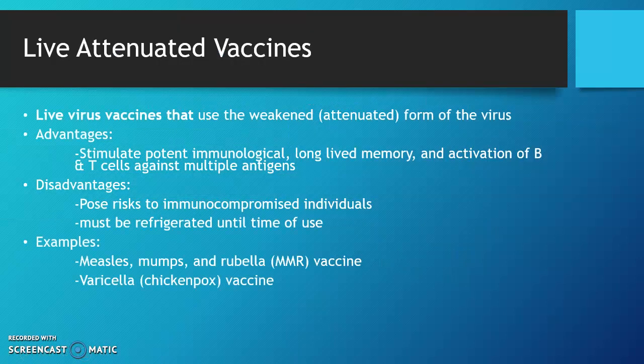The first type is live attenuated vaccine, which is a live virus vaccine that uses the weakened attenuated form of the virus. An advantage would be that it stimulates potent immunological, long-lived memory, and activation of B and T cells against multiple antigens. A couple of disadvantages would be that it poses risks to immunocompromised individuals and that it must be refrigerated until time of use.